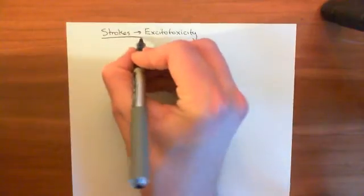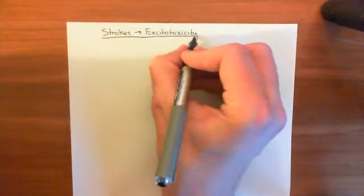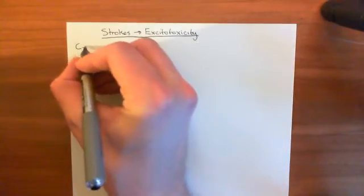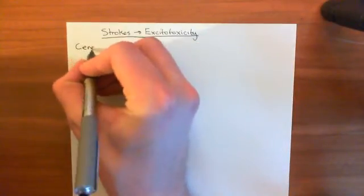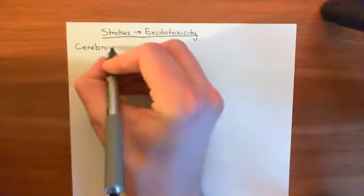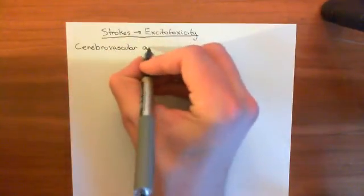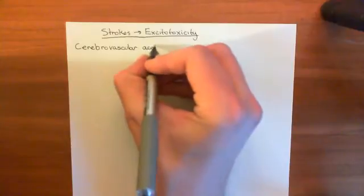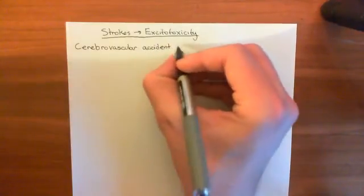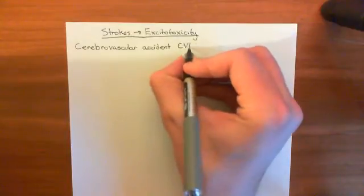So what is a stroke? Well, a stroke has another fancy name — it's often called a cerebrovascular accident, frequently abbreviated to CVA: C for cerebro, V for vascular, and A for accident. So, CVA.